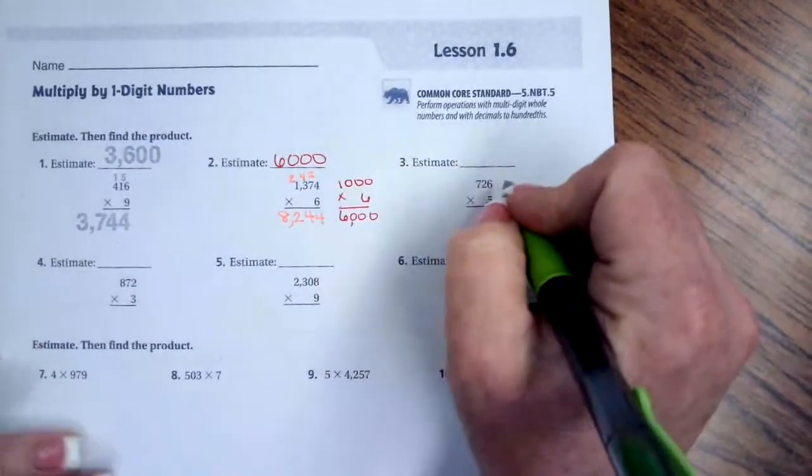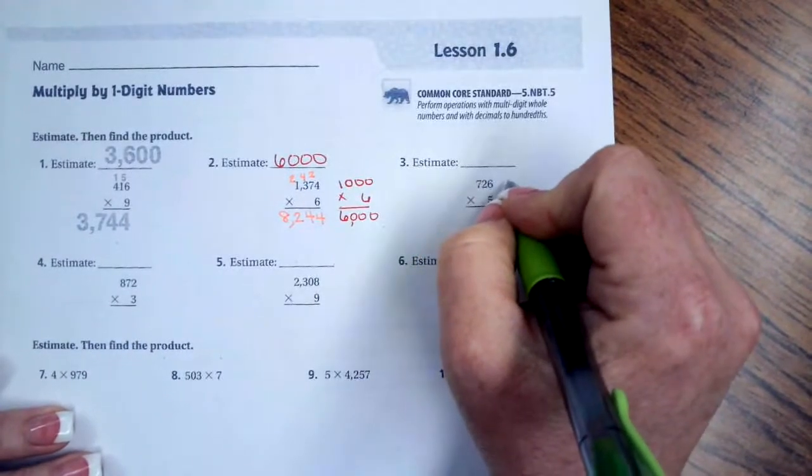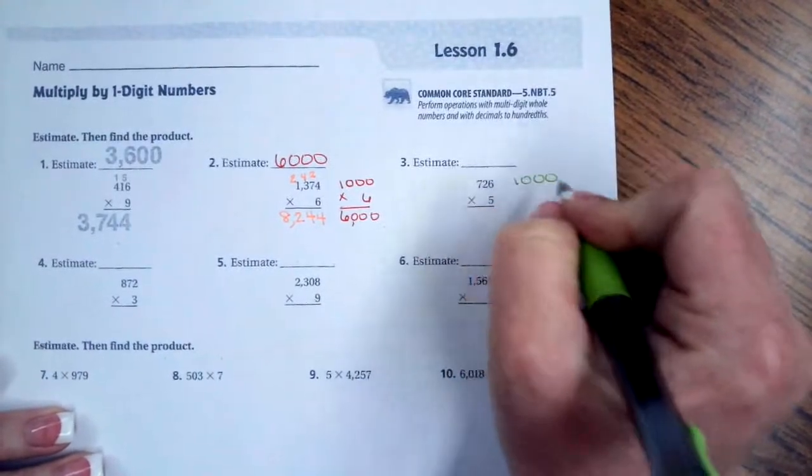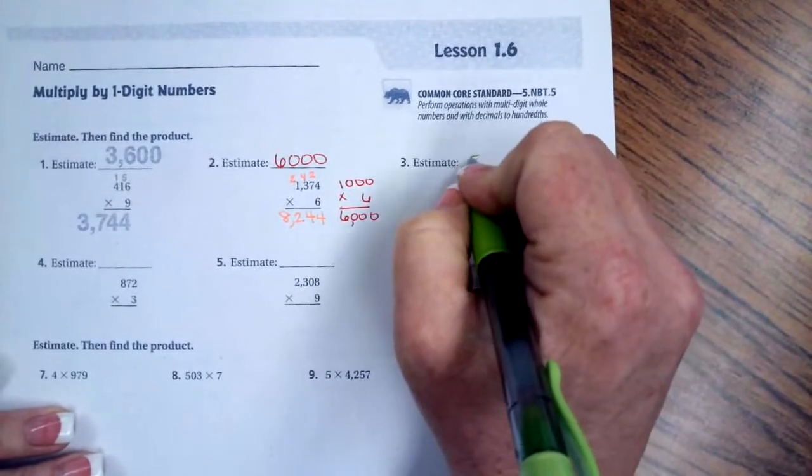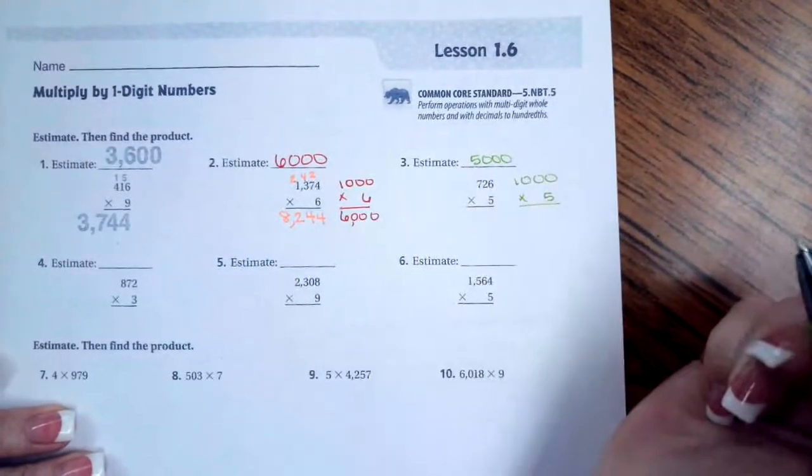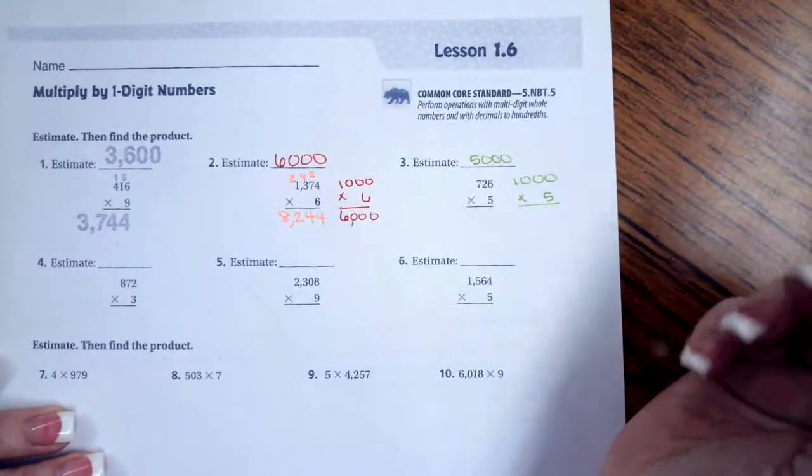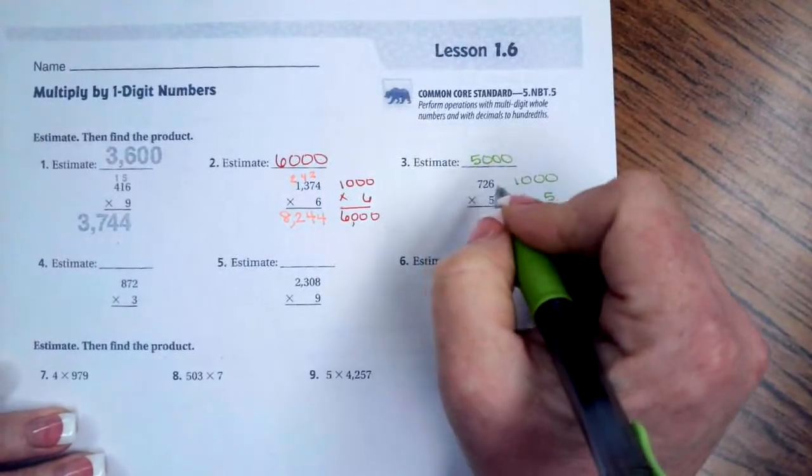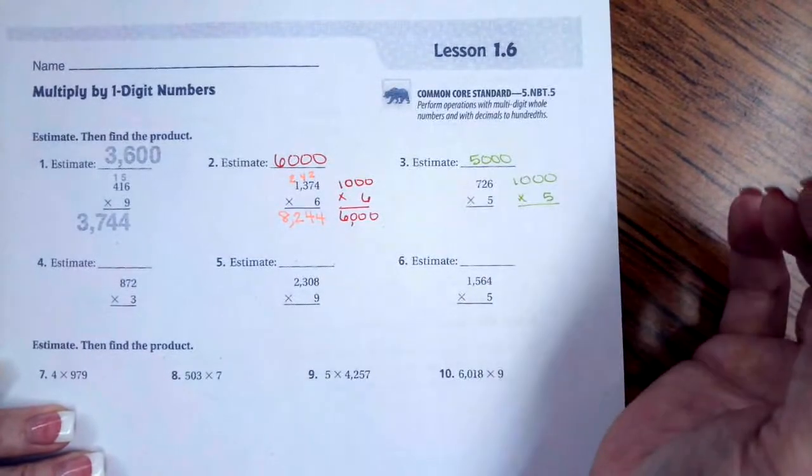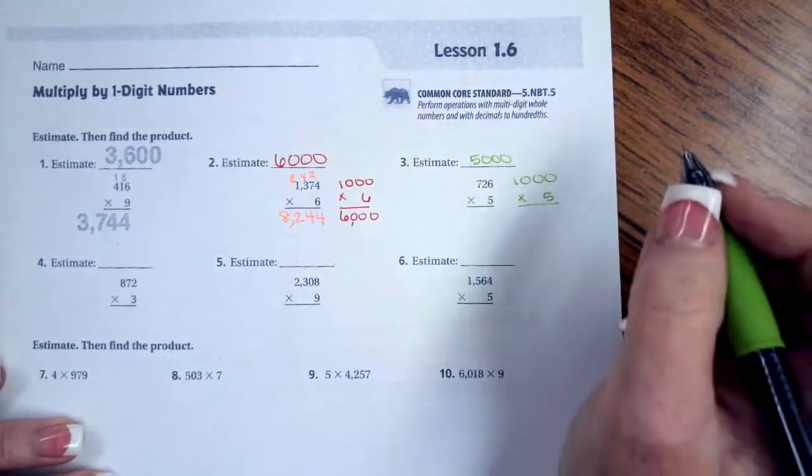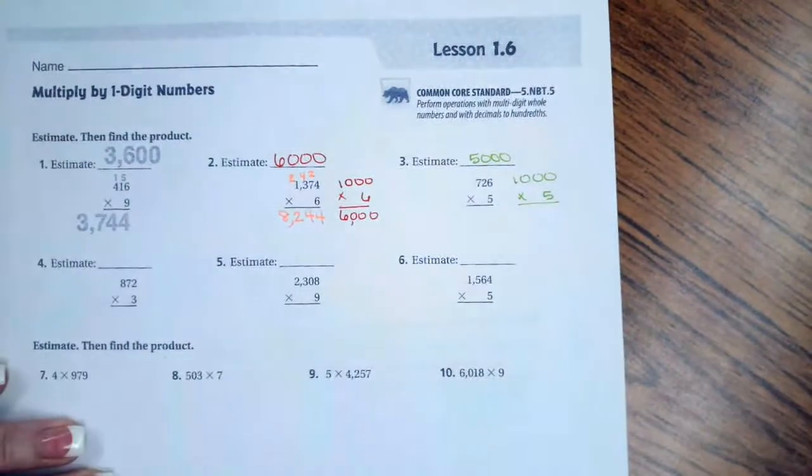We're going to do the same thing for number three. So seven hundred and twenty-six is going to round to about a thousand and we're going to keep our five, so our estimate is going to be five thousand. You can, if you choose, round this to five hundred instead. It will do the same thing, not a problem. It's an estimate, so no answer is going to be perfect.